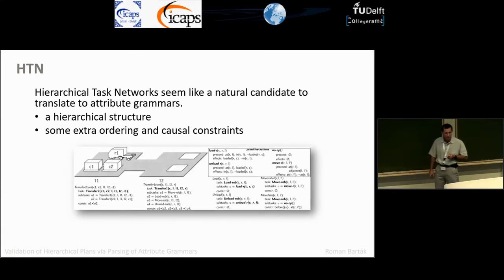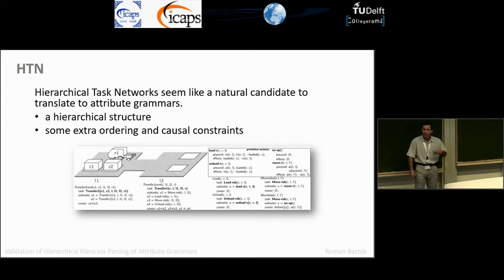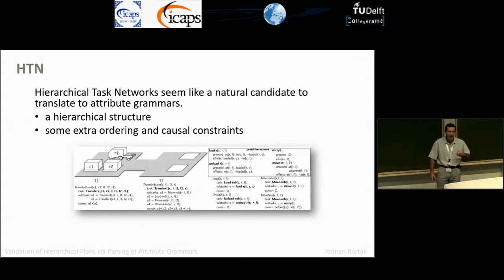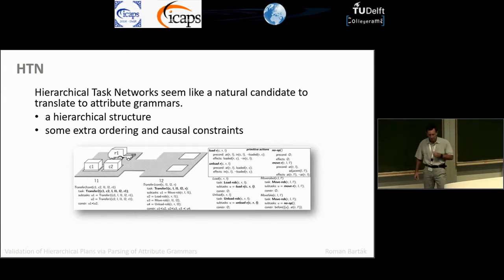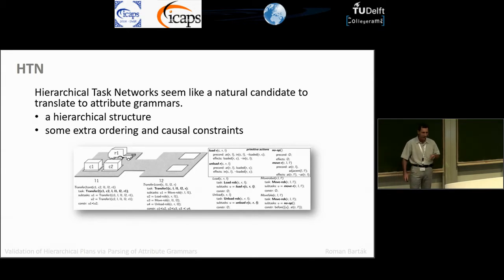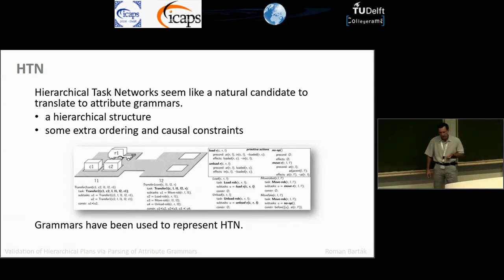As an example domain, we are moving containers between locations. We have a task called 'move two containers,' which consists of two subtasks: move one container and move another container. Moving a container means moving the robot to some location, loading the container onto the robot, moving the container to the other location, and unloading it. This is a very natural task to encode using grammars.